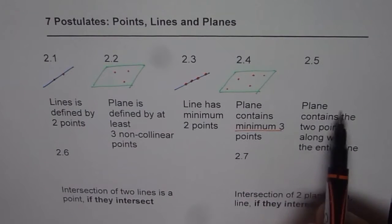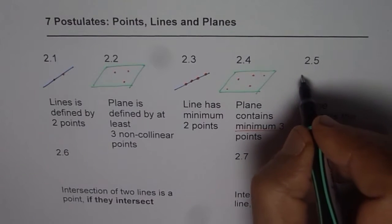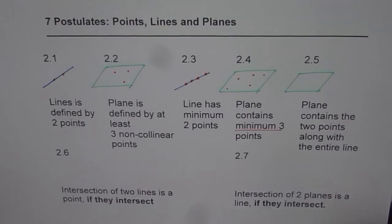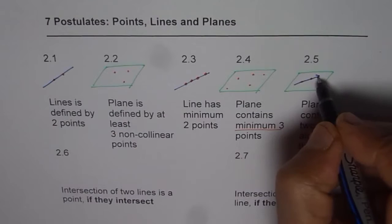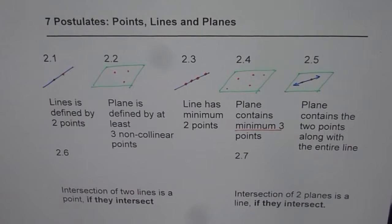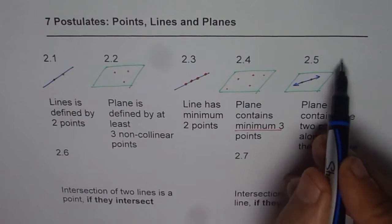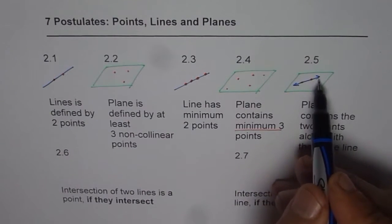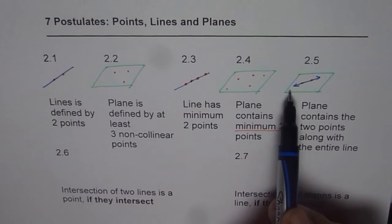Fifth is plane contains the two points along with the entire line. So it says that if a plane is defined and we have somehow two points which are in the plane, in that case the plane will contain these two points but it will also contain the whole line which has these two points. Whenever I am drawing this parallelogram for a plane it extends till infinity on all the sides just as a line extends to infinity. So as the line progresses it is within the plane. 2.5 is that a plane contains two points along with the whole line.